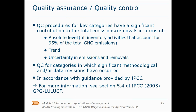Quality assurance and quality control are important aspects of the whole process. Quality control is performed by the inventory development team itself. Quality assurance is performed by people who are not involved in the inventory development process. Quality control procedures need to be implemented for checking the quality of the data included in the greenhouse gas inventory, following the IPCC guidance. This needs to be done for key categories and for individual categories in which significant methodological and/or data revisions have occurred. Quality assurance and quality control helps to improve transparency, consistency, comparability, completeness and accuracy in national greenhouse gas inventories.